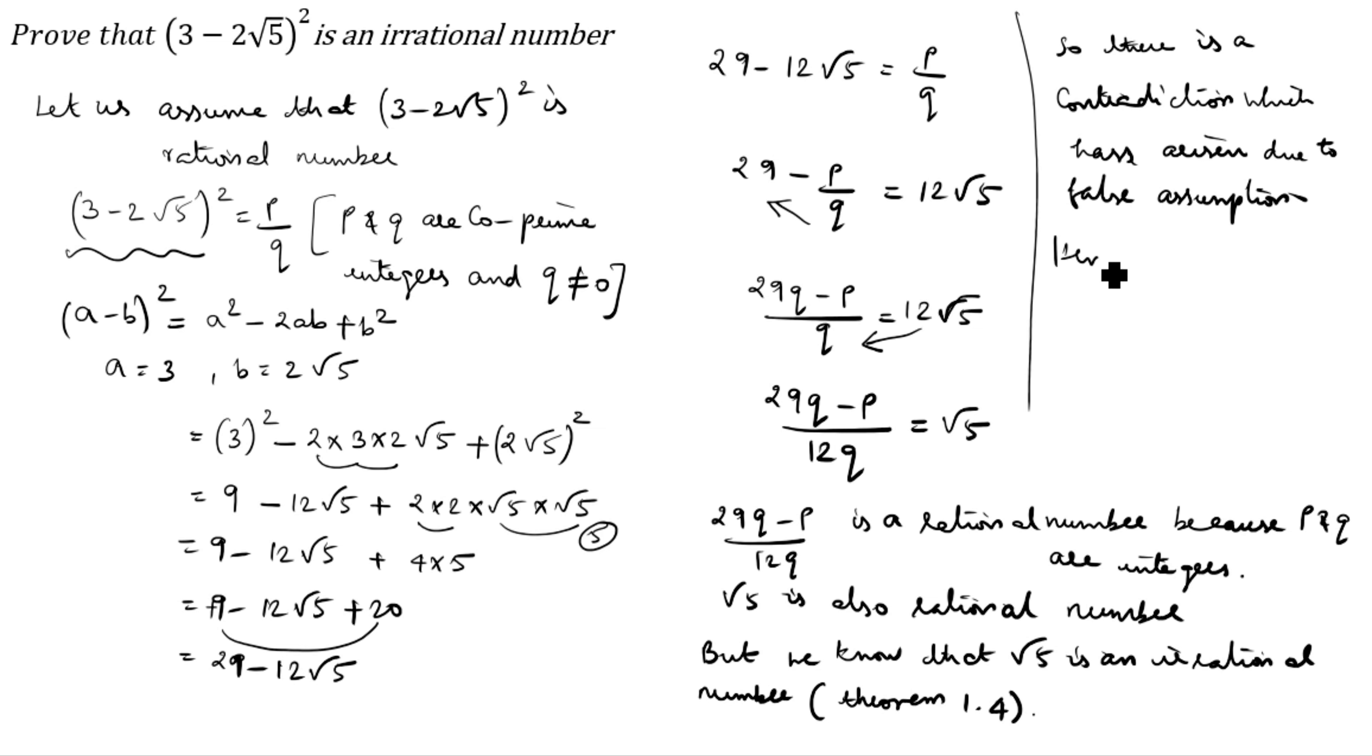Hence, it is proved that 3 minus 2 root 5 the whole square is an irrational number.